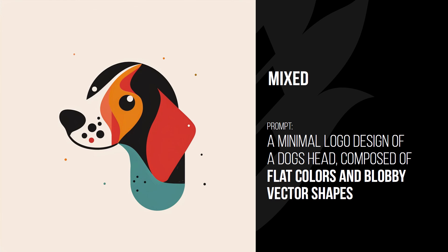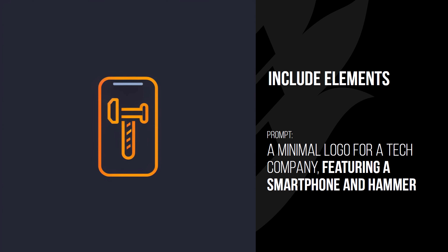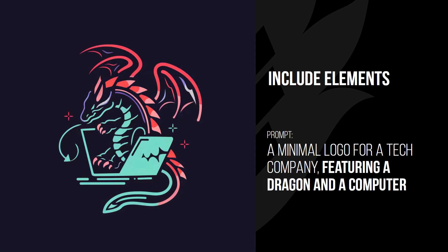You can mix it all together — such as 'flat colors and geometric shapes' or 'flat colors and blobby vector shapes.' These are great because you can convert or trace them pretty easily in Adobe Illustrator. You can also include specific elements, such as 'featuring a smartphone and a hammer' or 'featuring a dragon and a computer,' which can produce nifty results and great logo inspiration.